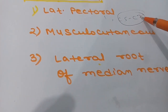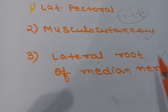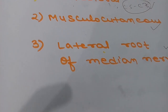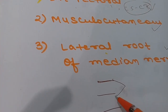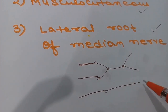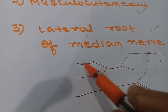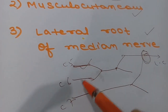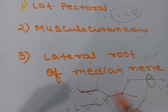All three branches from the lateral cord have the same root value: C5 to C7. This is because the lateral cord is formed by the union of the ventral divisions of the upper and middle trunks. C5 and C6 unite to form the upper trunk, and C7 forms the middle trunk. The ventral divisions of these two trunks unite to form the lateral cord, giving it fibers from C5, C6, and C7. Conceptually, all branches from the lateral cord have the root value C5 to C7.